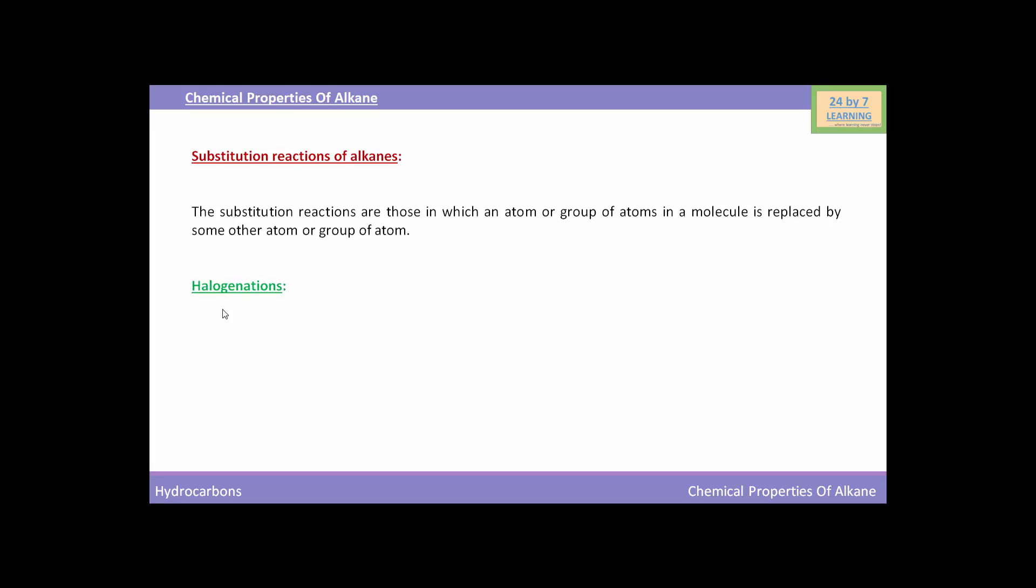In substitution reaction we will see the halogenations. This involves the replacement of one or more atoms of alkanes by the corresponding number of halogen atoms.